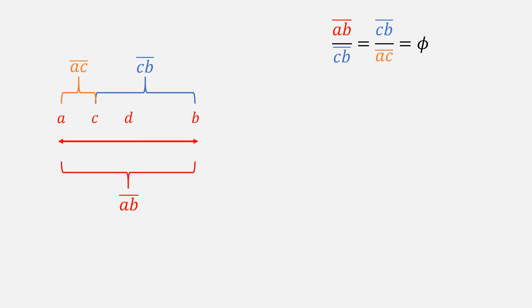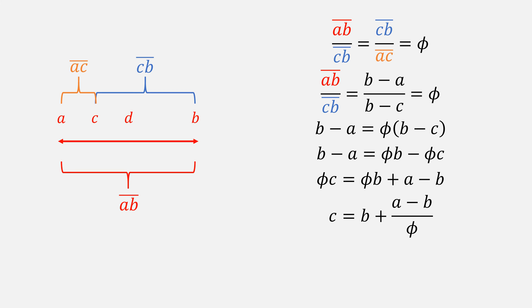Now that we've solved for the golden ratio, we can actually solve for C. To do that, rewrite our chord AB to be B minus A, and our chord CB to be B minus C. Then multiply both sides by the denominator, and expand the right side. Then move our C term over and everything else to the right side. Then divide everything by the golden ratio, and we have our equation for C. We can do the same process to find our value for D.